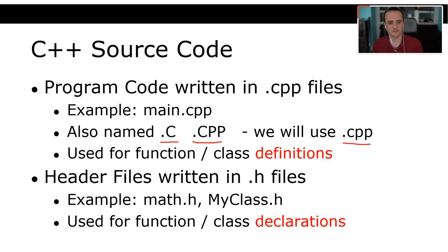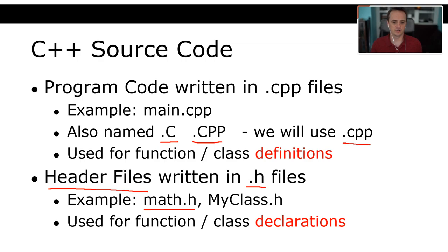In C++ you will also see header files — a big change for anyone who hasn't done C or C++ before. In Java or Python, you do not have header files. Header files are typically written in .h files — things like math.h or myclass.h — and are used for function and class declarations. We'll cover all of this in the first two classes.